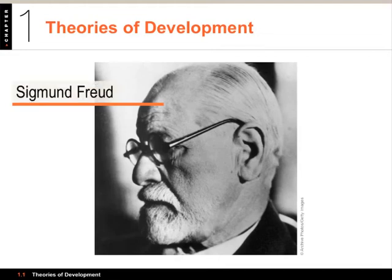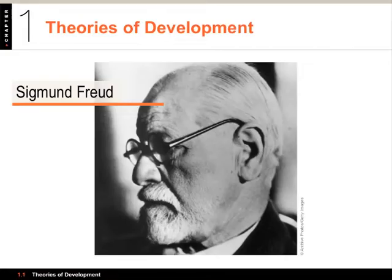In theories of development, the first thing we want to talk about is Sigmund Freud. Freud, who was originally a neurologist, developed the field of psychoanalysis — a particular form of psychological therapy. His theory was called psychosexual theory, and he said that development involved the conflict between the expression of basic drives like sex and aggression, and how they would conflict with external limits such as parental expectations and social rules.